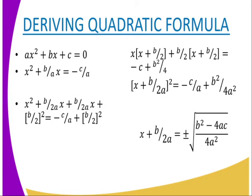We need to use the completing square method to solve the general quadratic equation. We have the equation: ax squared plus bx plus c equals zero. We take c to the other side, then divide everything by a. So we get x squared plus (b over a)x equals negative c over a.